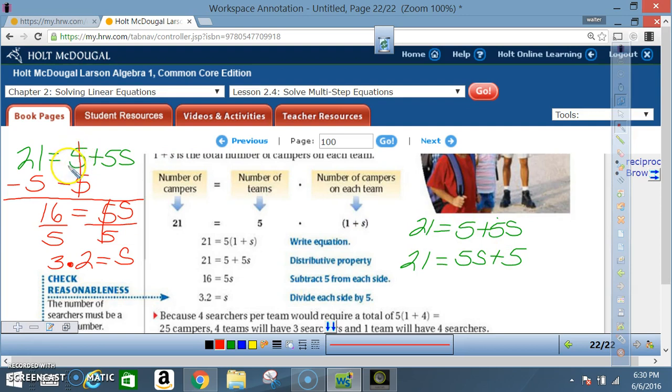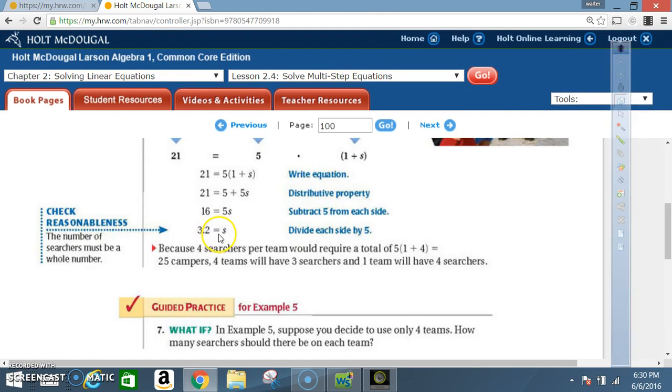Okay, now that we got an answer of 3.2, we want to check for reasonableness. That is, we want to check to make sure the answer makes sense. The number of searchers must be a whole number. In other words, you cannot have a piece or a part of a searcher. So therefore we're going to round the 3.2 off to 4.